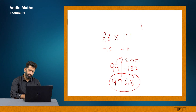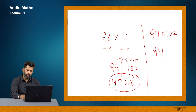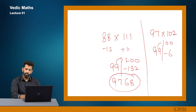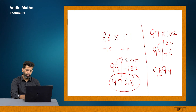For 97 × 102: differences are minus 3 and plus 2. So 97 plus 2 gives 99 (left part). On the right-hand side: minus 3 into plus 2 gives minus 6. Carry back 1 from the left (equals 100). So 100 minus 6 gives 94 (right part), and 99 minus 1 gives 98 (left part). My answer is 9894. Remember: I need exactly two digits on the right.